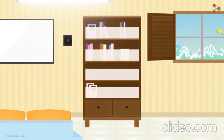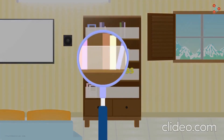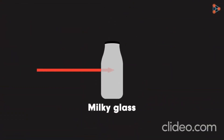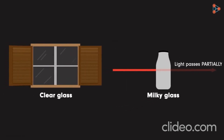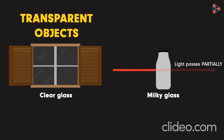Now look at this shelf which has a milky glass. Are we able to see what's inside? Well, we can't see the things clearly, but you do see something, right? You can probably guess that books are kept inside. Milky glass allows light to pass through it, but only partially, and one can see some light coming through it. While objects like clear glass are called transparent objects, objects which allow light to pass through only partially are called translucent.